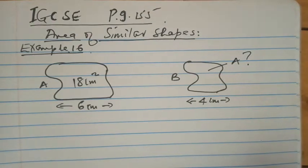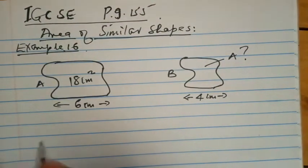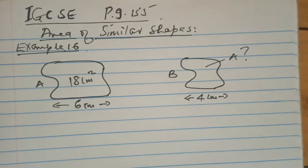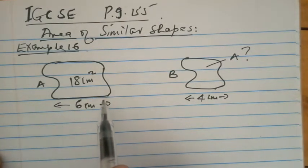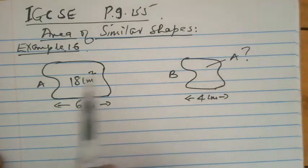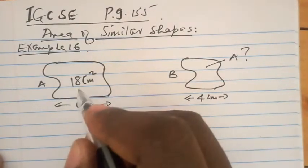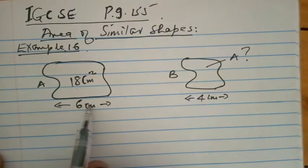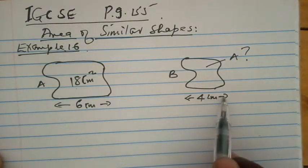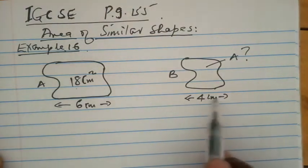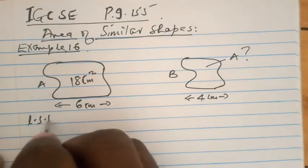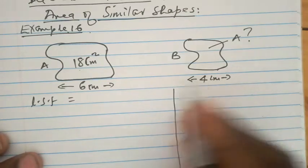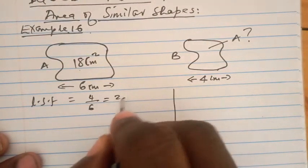We must start by deciding where we have complete information. We have the area of shape A but not the area of shape B — so the area side is incomplete. However, we have one dimension of shape A and a corresponding dimension of shape B, so that is complete. The linear scale factor is the length of the new over the length of the old: 4 over 6, which simplifies to 2 over 3.